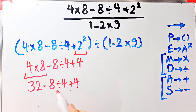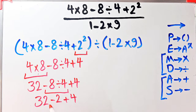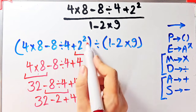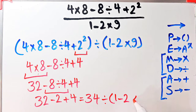We have subtraction, division, and addition. First we do the division: negative 8 divided by 4 equals negative 2. Now we have 32 minus 2, then plus 4. 32 minus 2 equals 30, and 30 plus 4 equals 34. Now the question is 34 divided by open parenthesis 1 minus 2, then times 9.